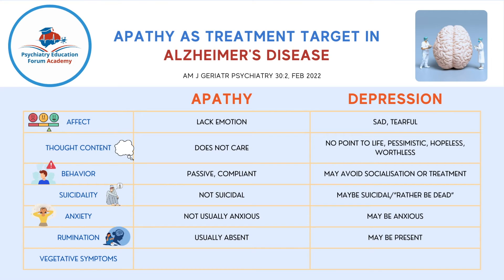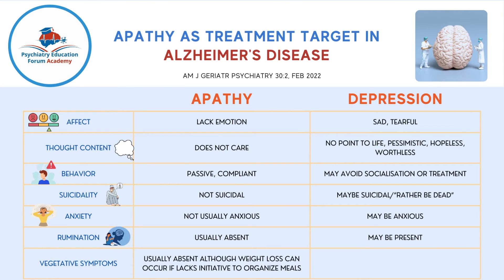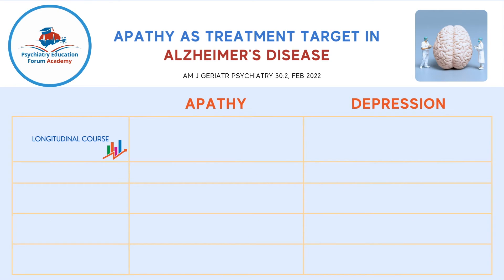Regarding vegetative symptoms, in apathy these are mostly absent, though weight loss can occur if there is lack of initiative to organize meal intake. In depression, vegetative symptoms can range from poor sleep to loss of appetite and weight loss.